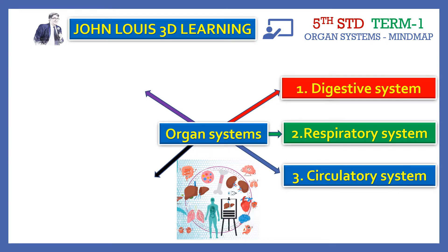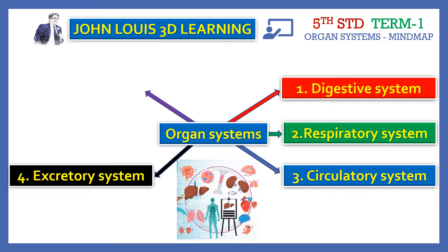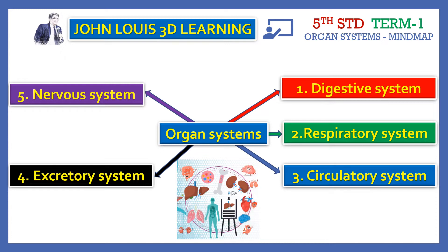The third is the Circulatory System. The fourth system and the fifth system are also covered. So in the Mind Map, we are going to learn: digestive system, respiratory system, excretory system, and nervous system. Each system we can learn and understand in detail.